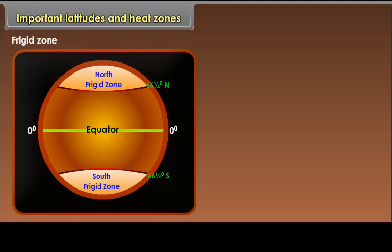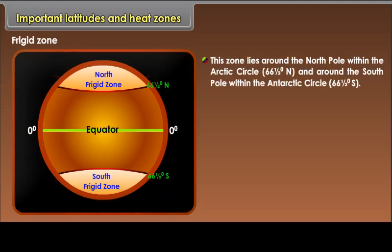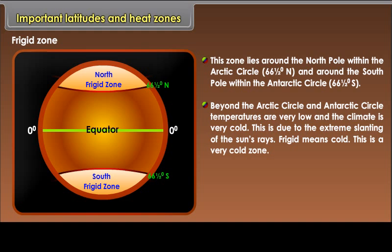Frigid zone: This zone lies around the North Pole within the Arctic Circle (66 and a half degrees north) and around the South Pole within the Antarctic Circle (66 and a half degrees south). Beyond the Arctic Circle and Antarctic Circle, temperatures are very low and the climate is very cold, due to the extreme slanting of the sun's rays. Frigid means cold — this is a very cold zone.